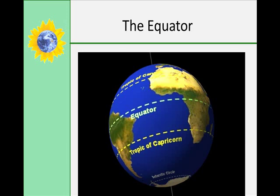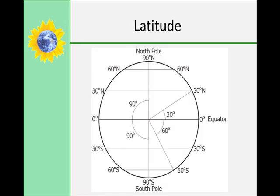Other circles drawn on the surface of the sphere are called small circles. The equator is an imaginary line that circles the earth halfway between the north pole and the south pole. The equator creates the northern hemisphere between the equator and the north pole, and the southern hemisphere between the equator and the south pole. The angular distance in degrees north and south of the equator is called latitude.